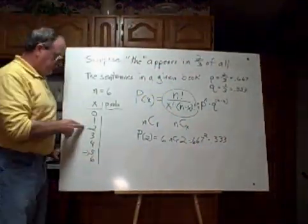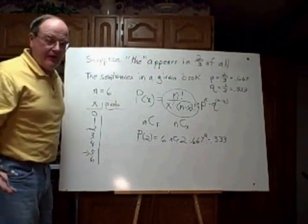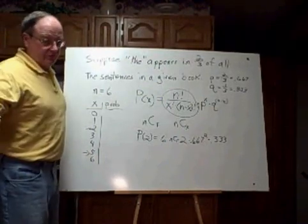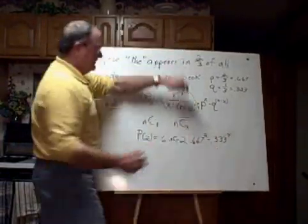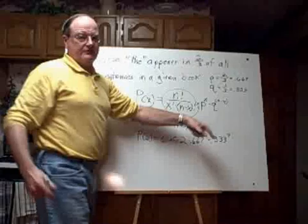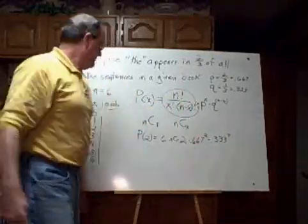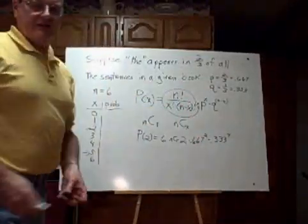...and that's going to be raised to the power of the number of failures. Well, if I have two successes out of six, how many failures do I have? All the rest of them—there must be four. I mean, these two numbers have to add up to six, right? You either got failures or successes, and there's nothing else. They have to add up to six.